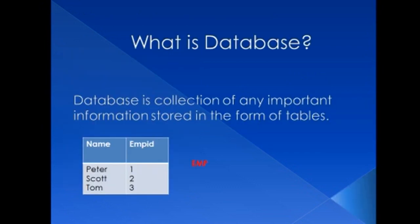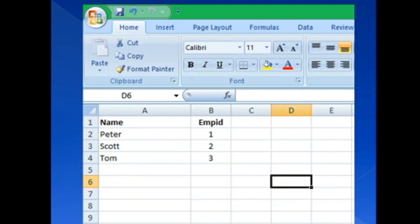The next topic to be discussed is: what is database? Database is a collection of any important information stored in the form of tables. Now you can relate back-end and database — whatever we store in back-end is actually the database. We discussed the same thing when talking about back-end: we store information in the form of tables. A familiar example is Microsoft Excel sheet — we store data there in the form of tables. In companies, we have special softwares to store data: Oracle, SQL Server, IBM DB2, MySQL.